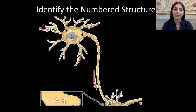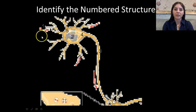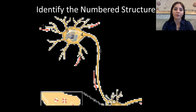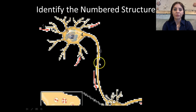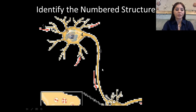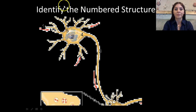As a review from our previous lecture, let's go over the different parts of the neuron, starting at number one. These are going to be the dendrites, which are receiving impulses from other nerve cells. Two is going to be the nucleus. Three is going to be the axon through which the impulses are transmitted. Four is going to be our axon hillock, and five is the cell body.